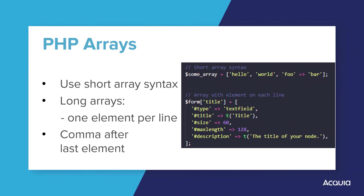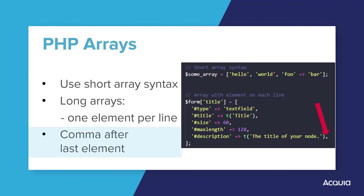PHP arrays should be formatted using short array syntax, which is just the square brackets. Within the brackets, a space should separate each element after the comma. There should also be spaces around the key association operator, if applicable. In many cases the line declaring an array will span longer than 80 characters, as is often the case with form and menu declarations. In these situations, each array element should be broken into its own line and indented one level. Note the comma placed at the end of the last array element — this is not a typo; it helps prevent parsing errors if another element is added later.